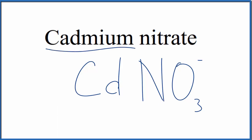Because cadmium is a metal, it's a transition metal, and the nitrate ion is a group of nonmetals, we need to think about charge when we write the formula for cadmium nitrate.